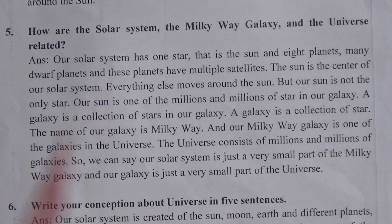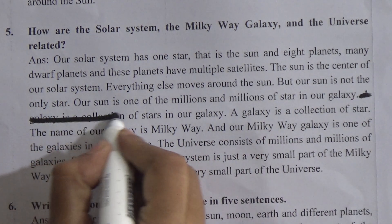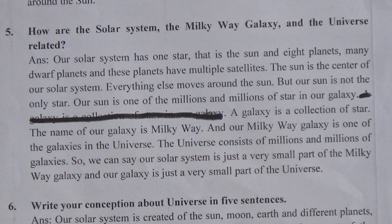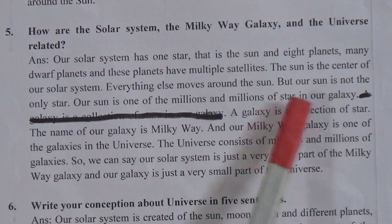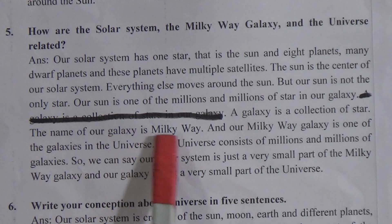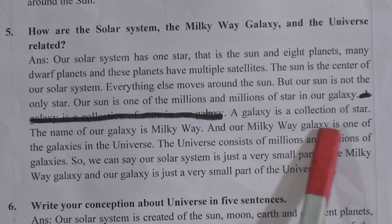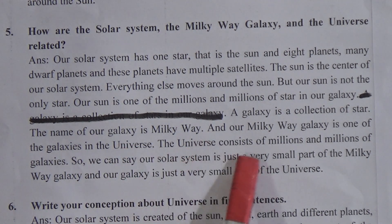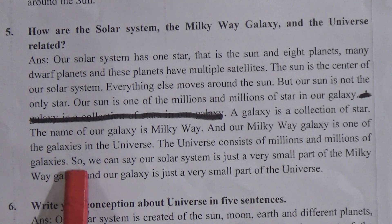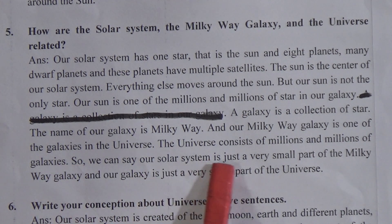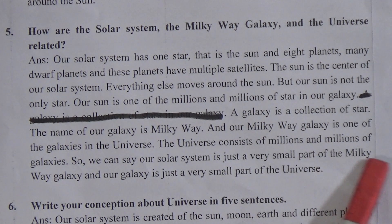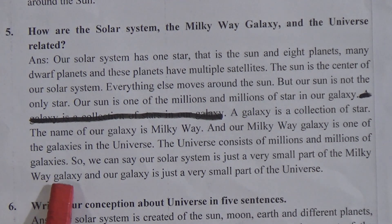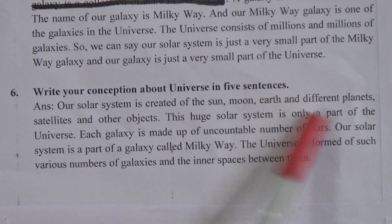A galaxy is a collection of stars. The name of our galaxy is Milky Way. And our Milky Way galaxy is one of the galaxies in the universe. The universe consists of millions and millions of galaxies. So we can say our solar system is just a very small part of the Milky Way galaxy, and our galaxy is just a very small part of the universe.